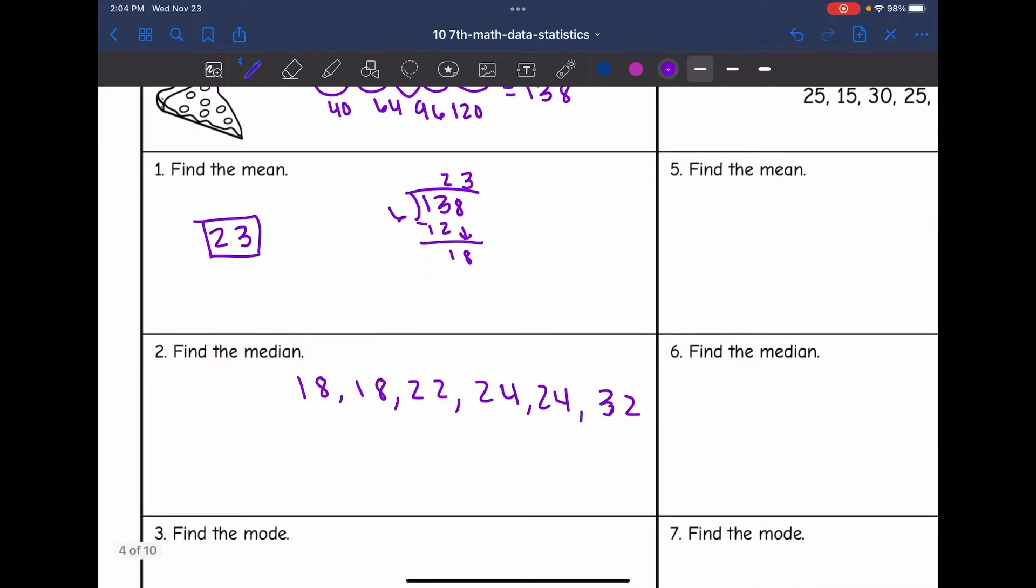So the median is going to be the middle of this data set. So when I go to the middle, it's between 22 and 24, and the average of 22 and 24 is 23. Since there's not just one middle number in the middle, we take the average of those, which is 23.